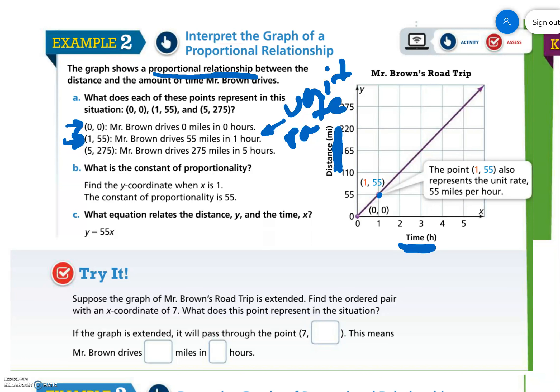(5,275). Mr. Brown drives 275 miles in five hours. Constant of proportionality is always at the point where x equals one. Our unit rate, we talked about that. So the k here is 55.